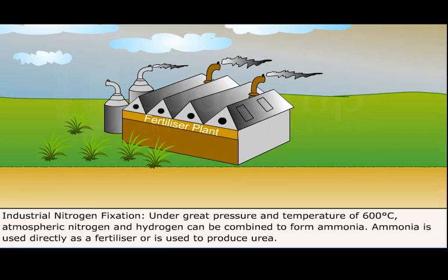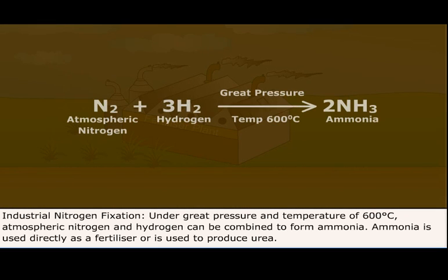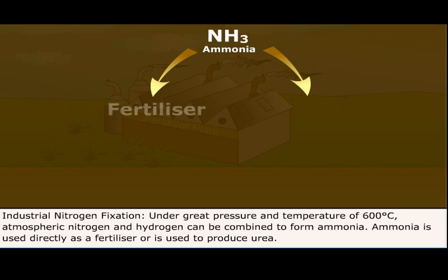Third is industrial nitrogen fixation. Under great pressure and temperature of 600 degrees Celsius, atmospheric nitrogen and hydrogen can be combined to form ammonia. Ammonia is used directly as a fertilizer or is used to produce urea.